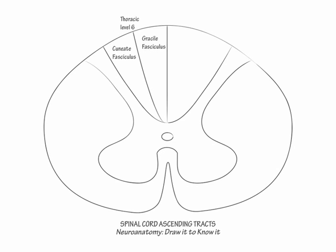They comprise large diameter, heavily myelinated white matter axon bundles, which carry vibration, two-point discrimination, and joint position sensory information. The information ascends quickly along them because of saltatory conduction.